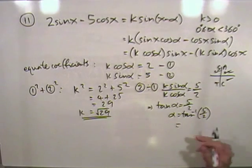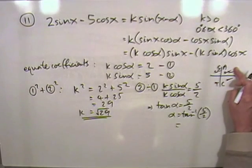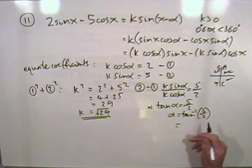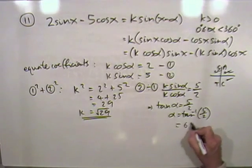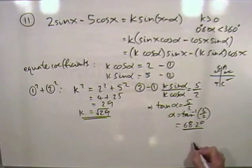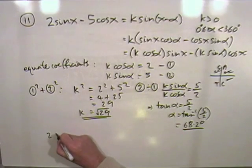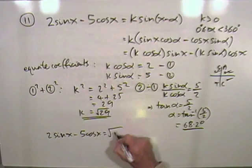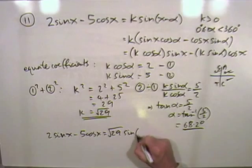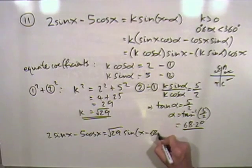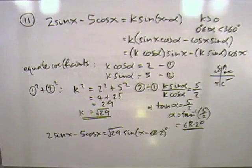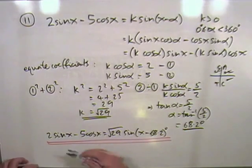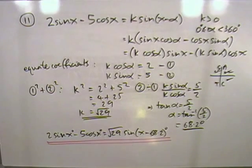If you use the CAST diagram, the all sine tan cos diagram, cosine's positive, sine is positive, so they're both positive there, and the tangent just follows them. Then using your calculator, type that inverse tan, and it is just the first one I want, the answer closest to 0. That gives you 68.2 degrees, and then you feed that in. So 2 sine x minus 5 cos x is root 29 sine of x minus 68.2 degrees.